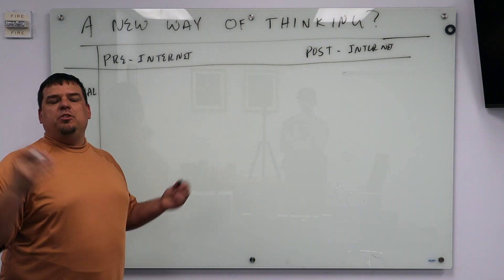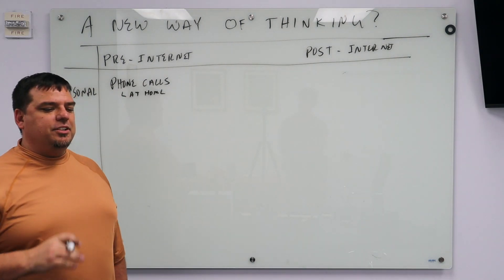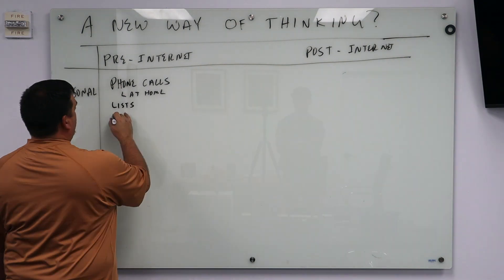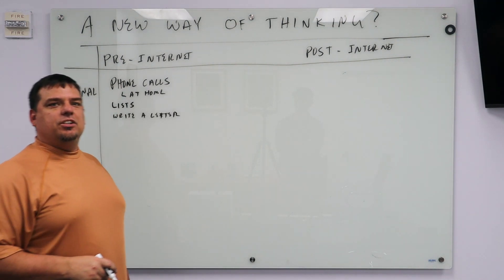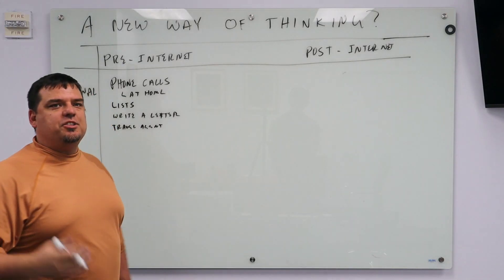In the pre-internet days, how did you communicate with your mom? Phone calls at home. How did your mom tell you that someone needed to pick up milk? Write a list, a letter. How did you plan a vacation? You went to a travel agent, got in your car, drove to the travel agent and spent a few hours there.